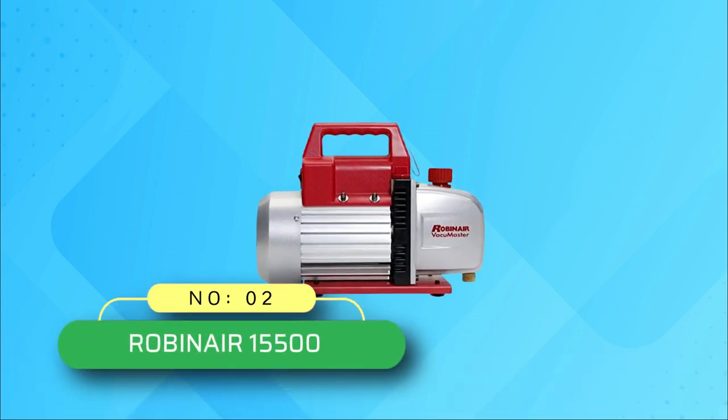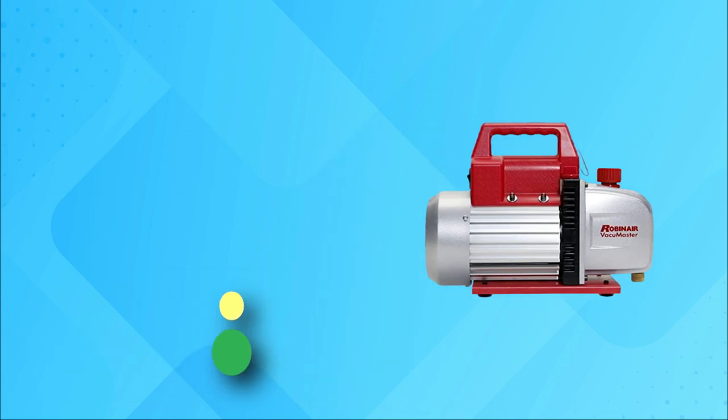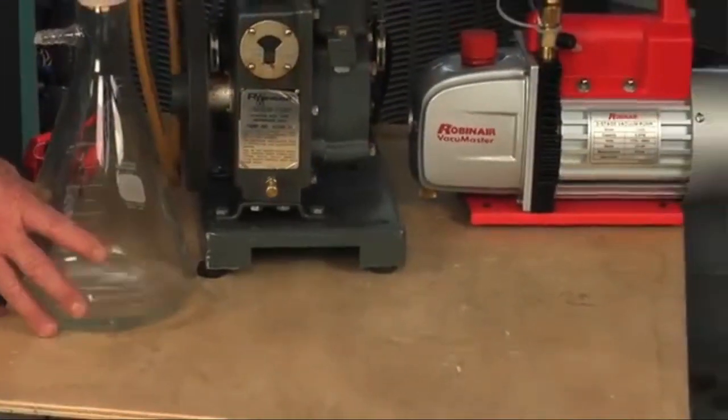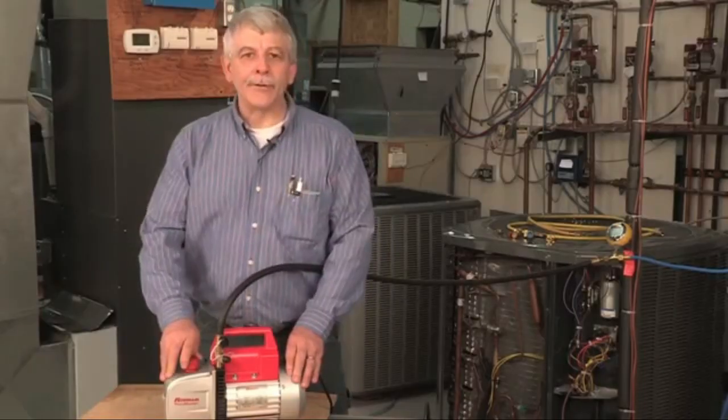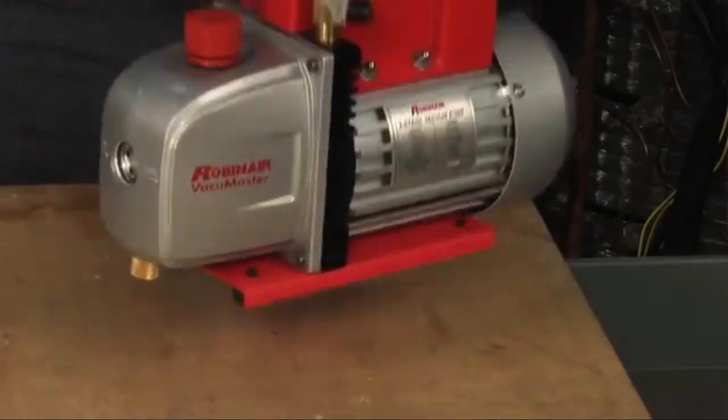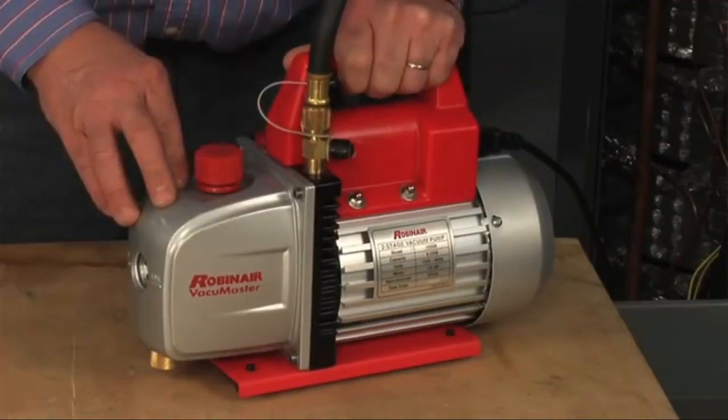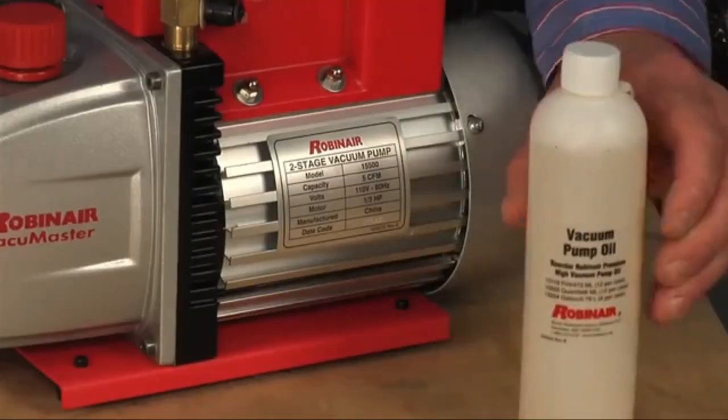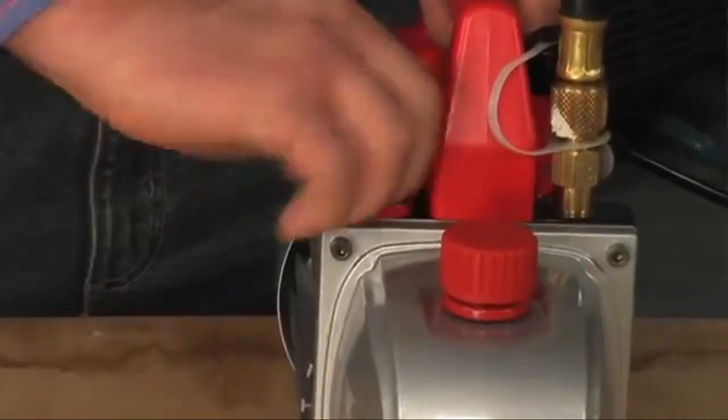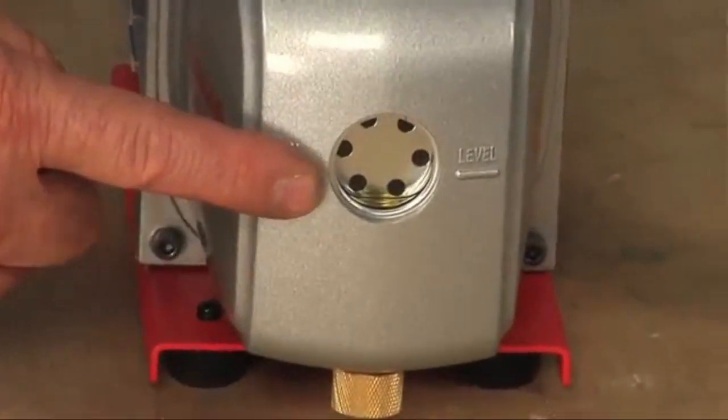Number 2, RobinAir 15500 AC Vacuum Pump. Get the job done with the RobinAir Vacuum Master Vacuum Pump. This best HVAC vacuum pump is explicitly made for commercial usage. Thus it comes with certain features which may not be found in the regular vacuum pump models. The RobinAir pumps have an immense 18-ounce capacity, and they are designed to make use of the two-stage rotary vane design system.